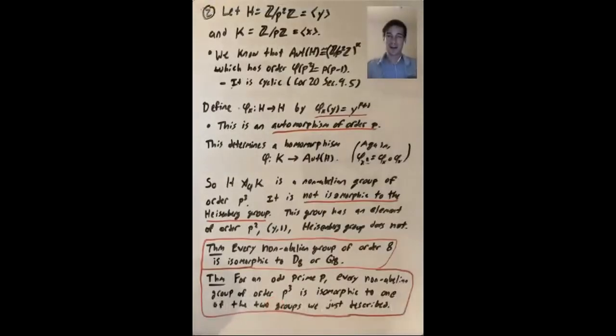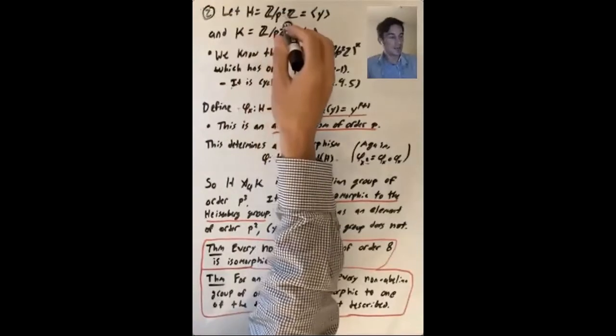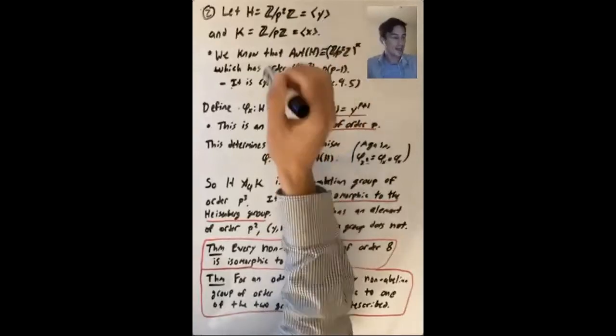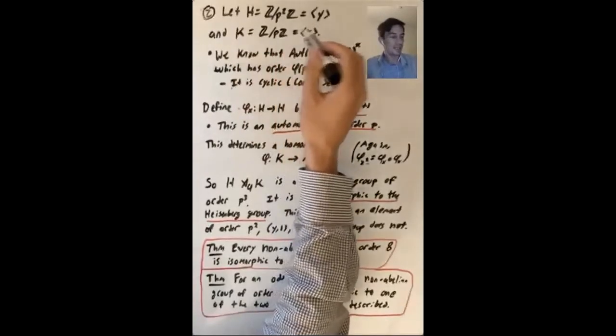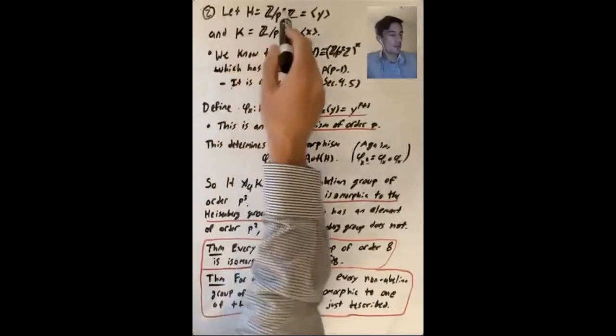Let's now talk about our second construction of a non-abelian group of order p cubed. In this one, let's let H be Z mod p squared Z generated by y and K be equal to Z mod pZ, generated by x.